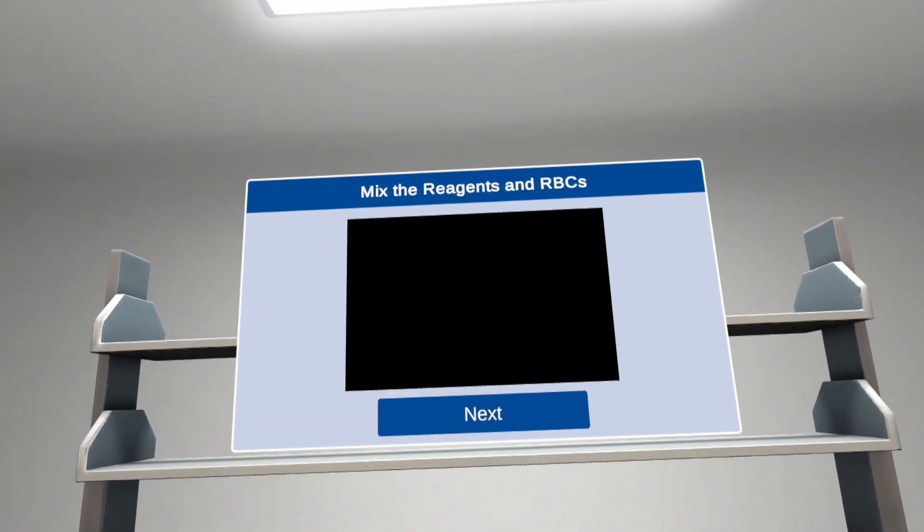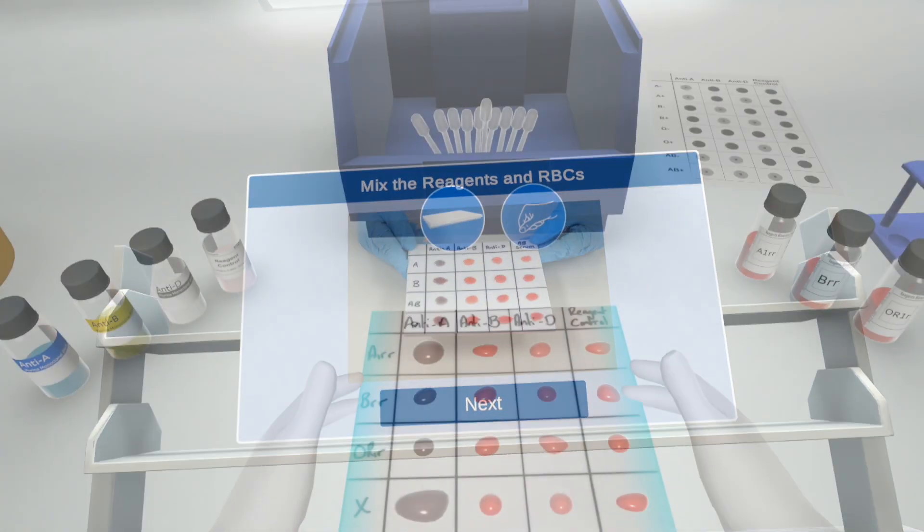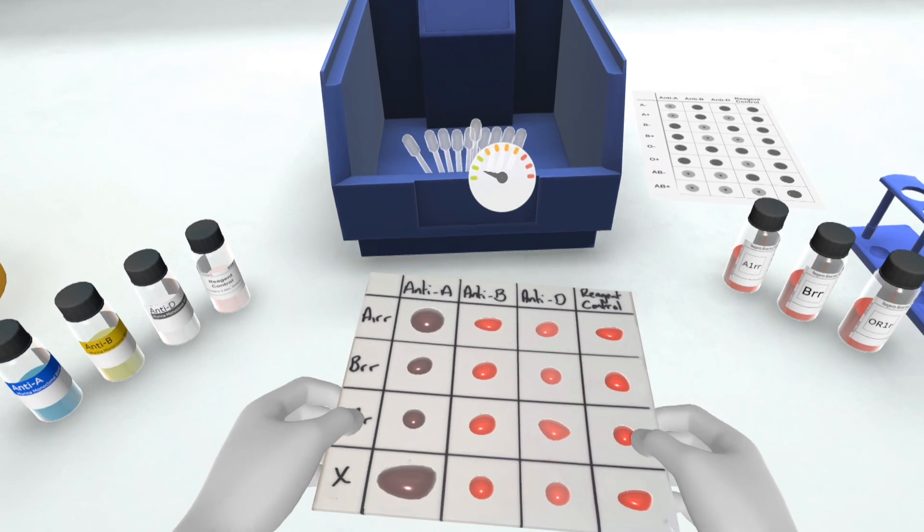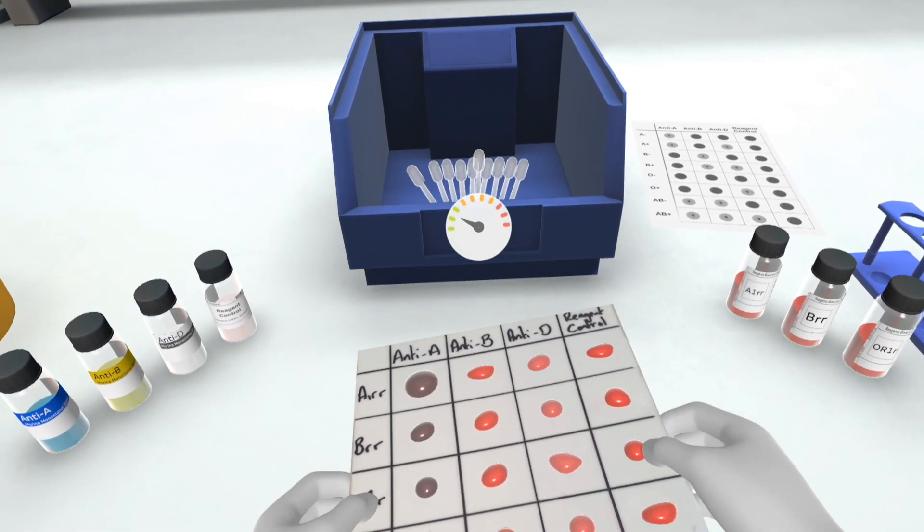Look up. It's now time to mix the reagents and RBCs as seen in this footage. Don't knock too vigorously or you might risk the drops running into each other. Look at the gauge and keep it in the green zone as before.